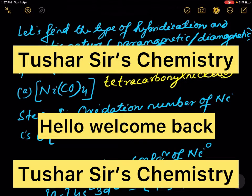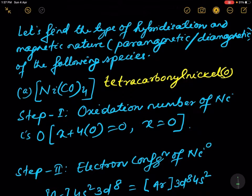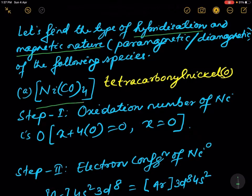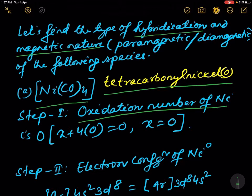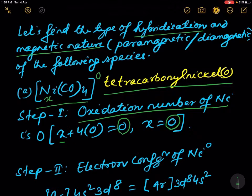Hello, welcome back to my channel. In this video we will discuss the type of hybridization and magnetic nature of some complex compounds and ions. In Ni(CO)₄, the oxidation number of nickel is x, and for CO it is zero. Since it is a neutral complex, the total oxidation number is zero, so by solving this equation x is found to be zero.